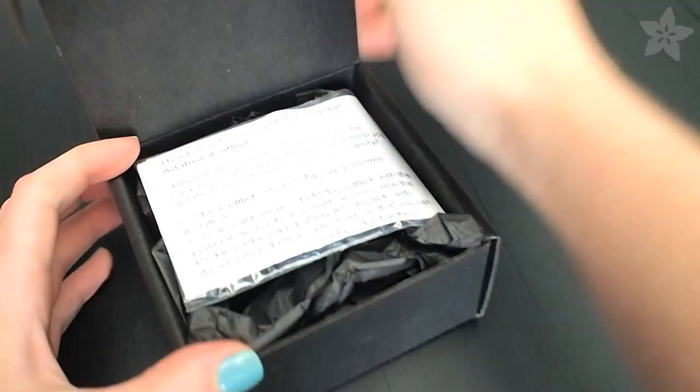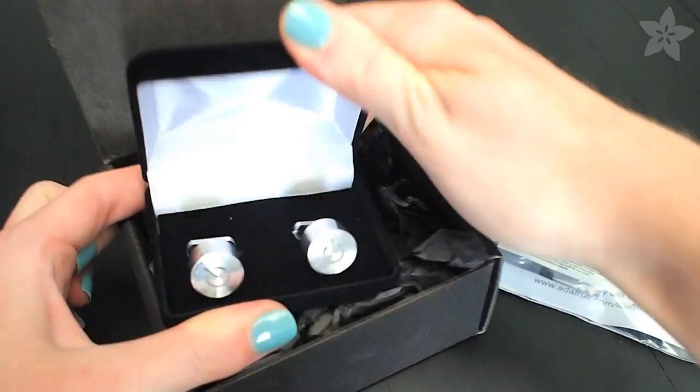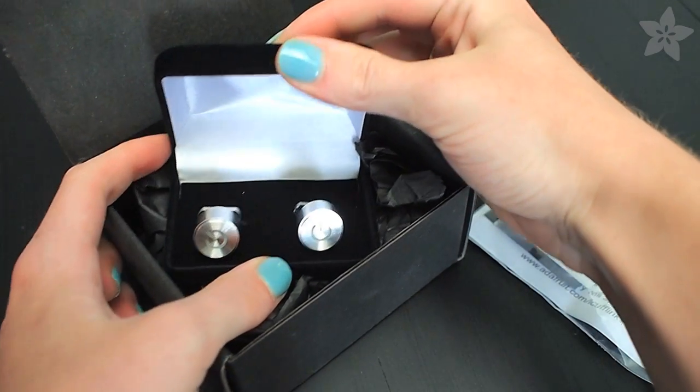Inside you'll find a set of instructions, some batteries, and of course your cufflinks. They're milled from aluminum and have a special circuit board with an LED inside.